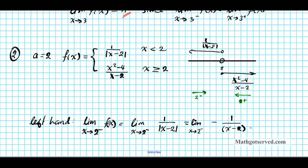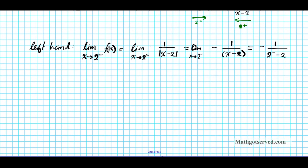We plug in two from the left: we get negative one over two from the left minus two. When you subtract that, you get negative one over zero from the left — that's an infinitely large negative number. Zero from the left is the same thing as negative one over infinity. Multiplying the numerator by the reciprocal of the denominator, our final answer is infinity. That is your left-hand limit.